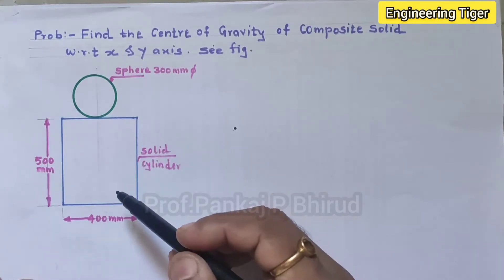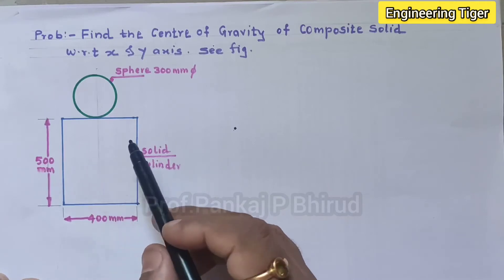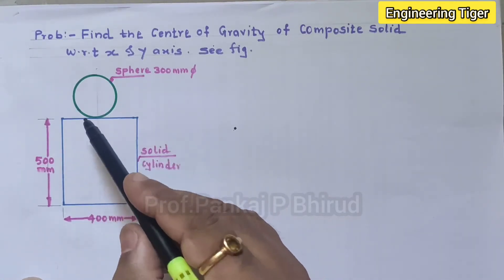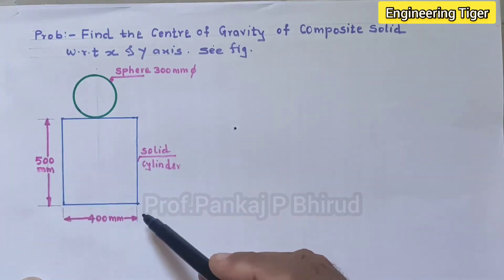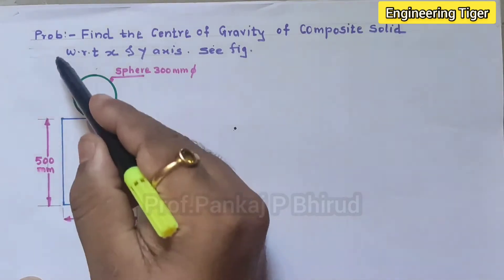So let us try to solve this example. For solving you have to redraw this given figure on your answer sheet and observe the figure. First of all we have to place this figure in the first quadrant. Place this composite figure in the first quadrant, that means we have to draw ox and oy.